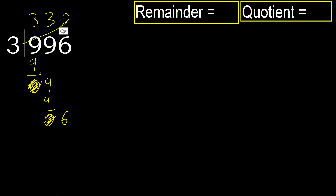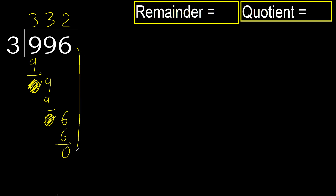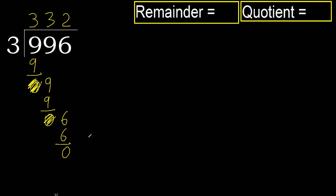Multiply by 2: 6 is not greater. Subtract. Next — there is no next number, therefore finish it.